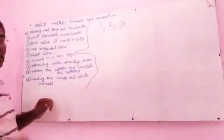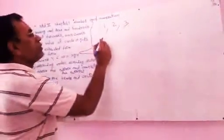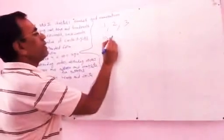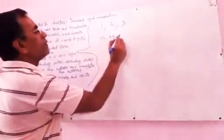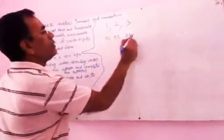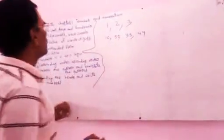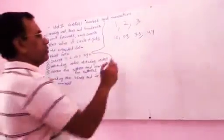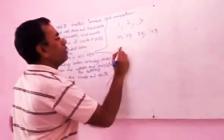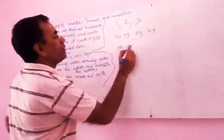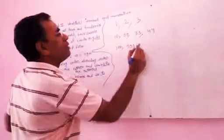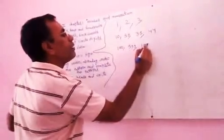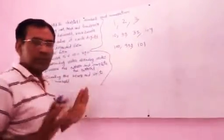In 10's, 2 digits come — for example, 10, 99, 33, 44. And in 100's, 3 digits come — for example, 100, 999, 101.